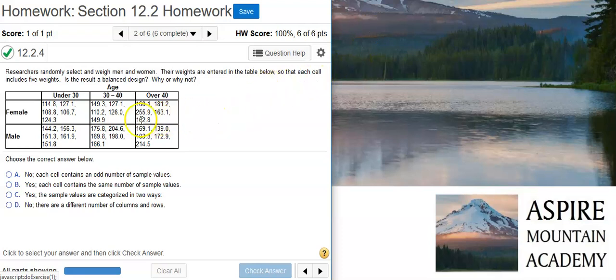Well, here we have our samples here in the table, and we notice we have the same number of samples for each of the cells in the table. This is what it means when it's talking about balanced design.